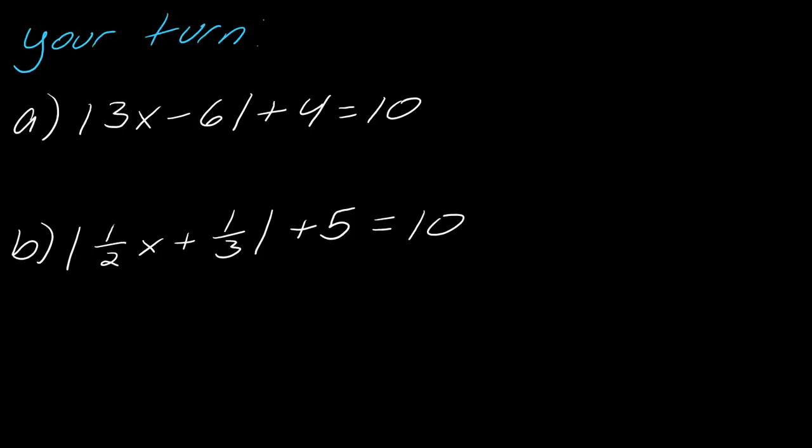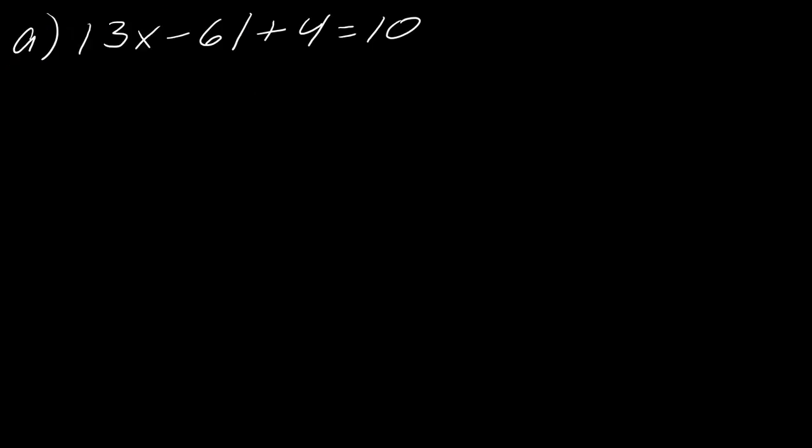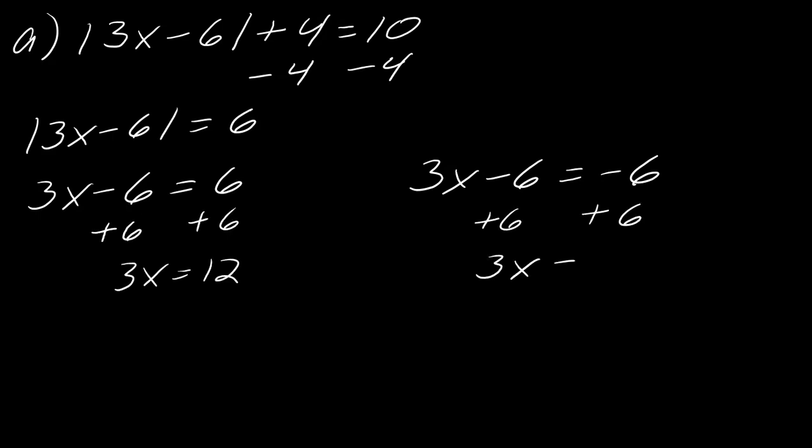So with that in mind, I have two exercises here for you to try. So go ahead and pause and try here. Okay, so first things first, we have to subtract the 4. So we get 3x minus 6 equals 6. And now I can break this up into its two cases. So I get 3x minus 6 equals 6. And 3x minus 6 equals negative 6. And from here, you can solve as usual. So I'll go ahead and show all those steps. And so here's the solution. x equals 4 or x equals 0.